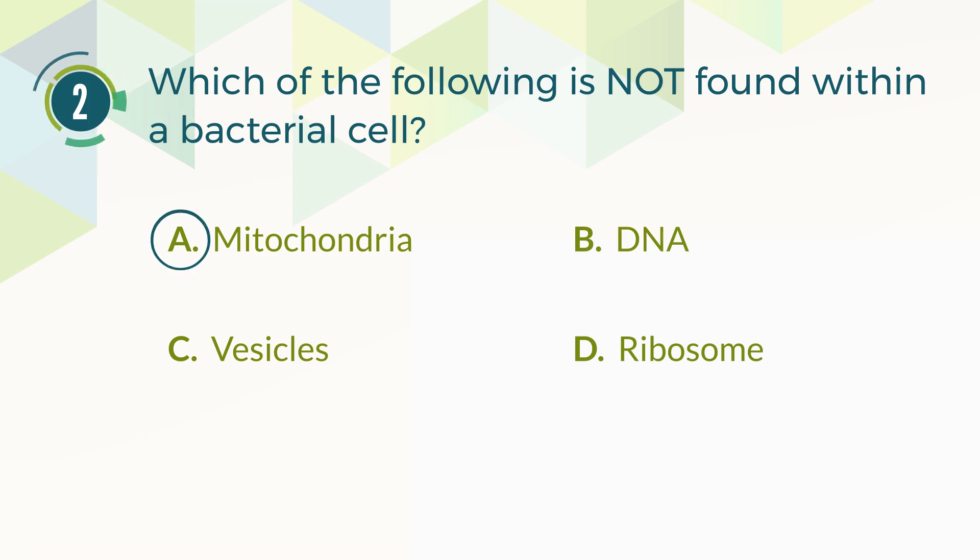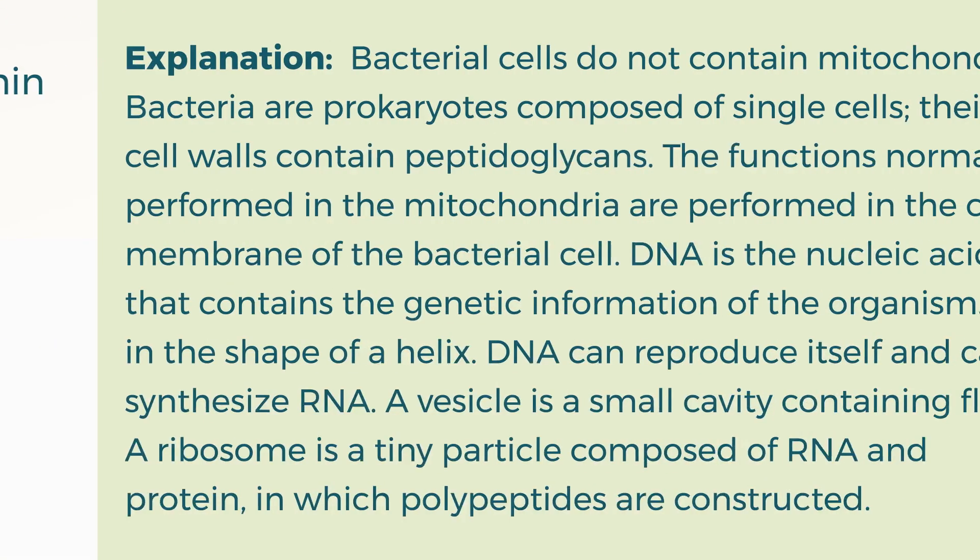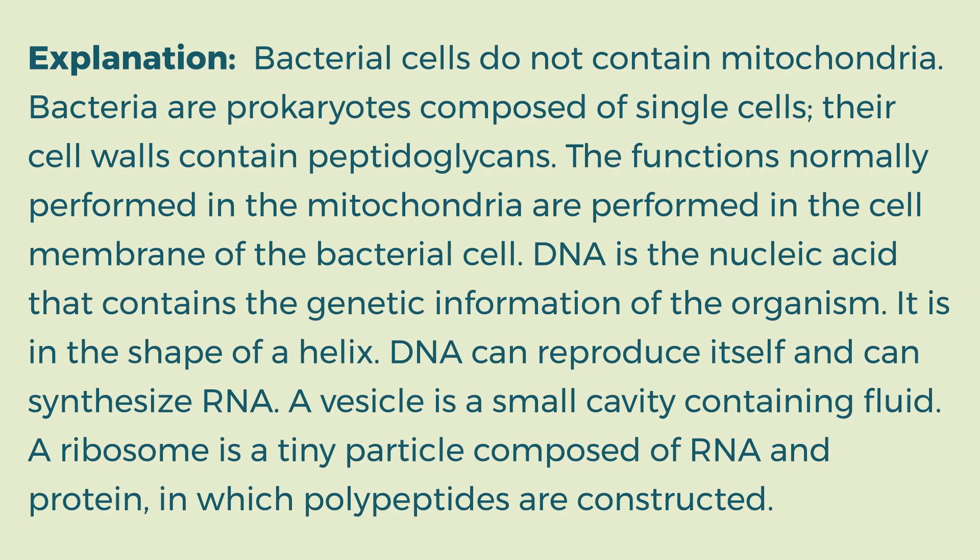The correct answer is A. Mitochondria. Explanation: Bacterial cells do not contain mitochondria. Bacteria are prokaryotes composed of single cells. Their cell walls contain peptidoglycans. The functions normally performed in the mitochondria are performed in the cell membrane of the bacterial cell. DNA is the nucleic acid that contains the genetic information of the organism. It is in the shape of a helix. DNA can reproduce itself and can synthesize RNA. A vesicle is a small cavity containing fluid. A ribosome is a tiny particle composed of RNA and protein, in which polypeptides are constructed.